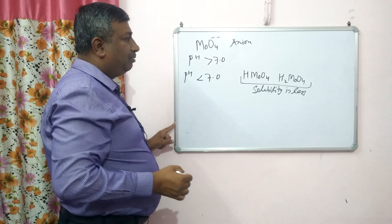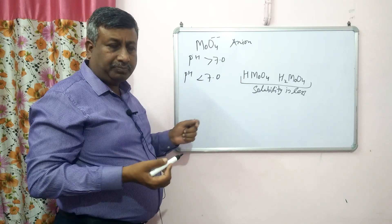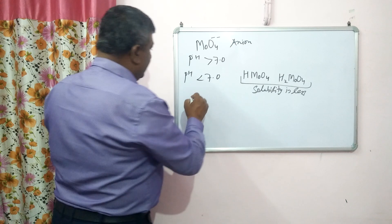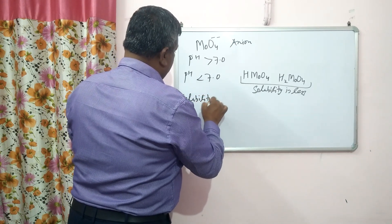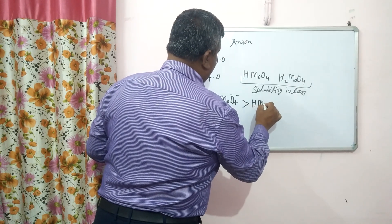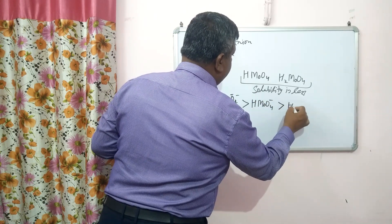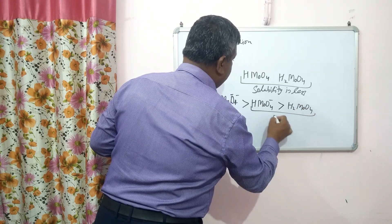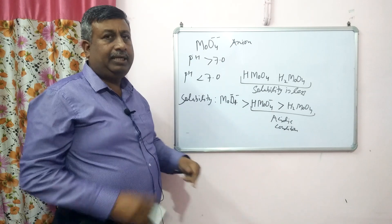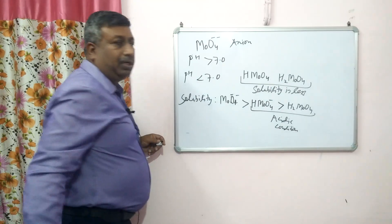Under acidic conditions, HMoO₄⁻ and H₂MoO₄ are formed and these are less soluble. As far as solubility is concerned, MoO₄²⁻ (divalent) has the highest solubility, followed by HMoO₄⁻ (monovalent), and then H₂MoO₄. These less soluble species dominate under acidic conditions, reducing molybdenum availability. The formation of the oxidized MoO₄²⁻ species occurs only at high pH.